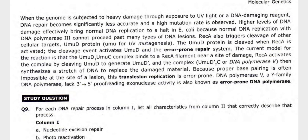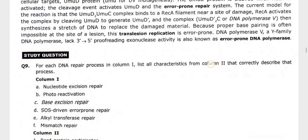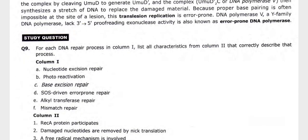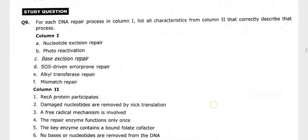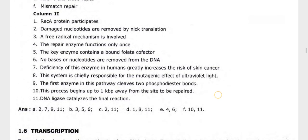The current model is that the UmuD'/UmuC complex binds to a RecA filament near a site of damage. RecA activates the complex by cleaving UmuD to generate UmuD'. The complex UmuD'2C, functioning as DNA polymerase V, then synthesizes a stretch of DNA to replace the damaged material. Because proper base pairing is often impossible at the site of the lesion, this translesion replication is error-prone. DNA polymerase V is a Y-family DNA polymerase and lacks 3'-to-5' proofreading exonuclease activity, also known as error-prone DNA polymerase.